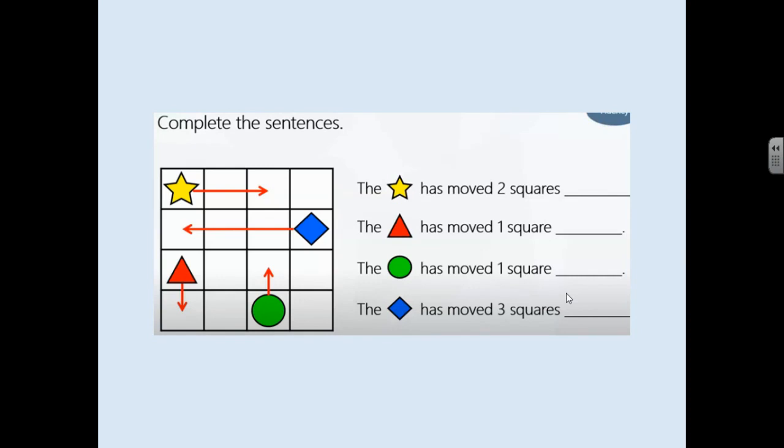Alright, let's have a look at it. So the star has moved two squares right. The triangle has moved one square down. The circle has moved one square up. And the square has moved three squares to the left.